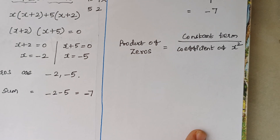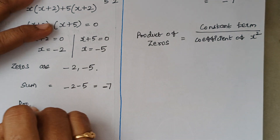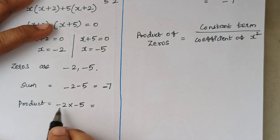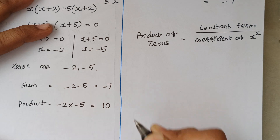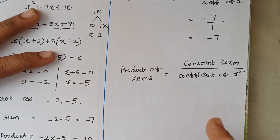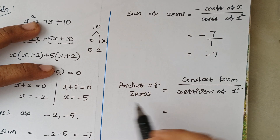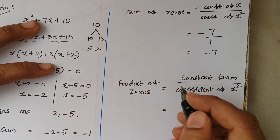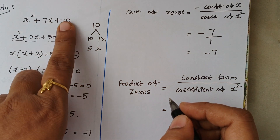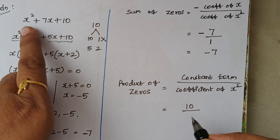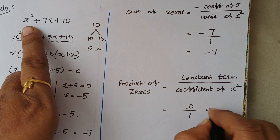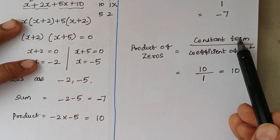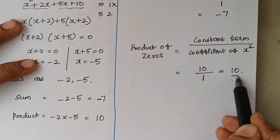The next thing is the product of zeros. The product = −2 × −5. Minus times minus becomes plus, and 5 × 2 = 10, so product = 10. Now using the formula: product of zeros = constant term ÷ coefficient of x². The constant term is 10, and the coefficient of x² is 1, so 10 ÷ 1 = 10. The product of zeros from both methods equals 10.